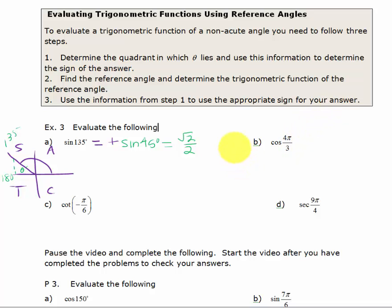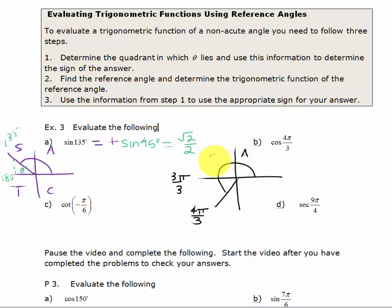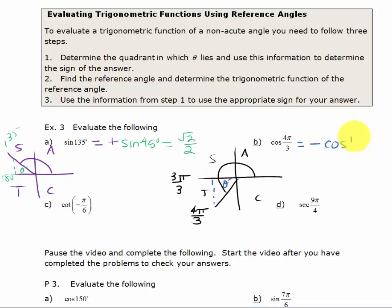Next, we have the cosine of 4π/3. The first thing I want to do is draw 4π/3. Since 3π/3 is the same thing as π, when I draw 4π/3, that brings me to the third quadrant. Using 'all students take calculus,' I know that the only thing positive in the third quadrant is tangent and its reciprocal. So I know that cosine is negative. The reference angle is going to be the difference between 4π/3 and 3π/3 — that little angle — so my reference angle is π/3.